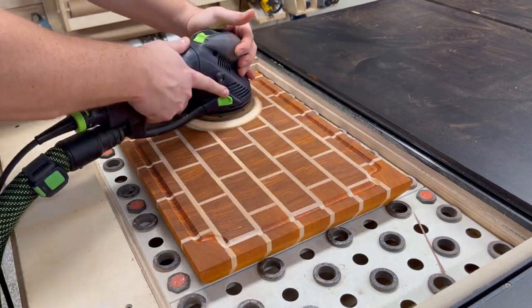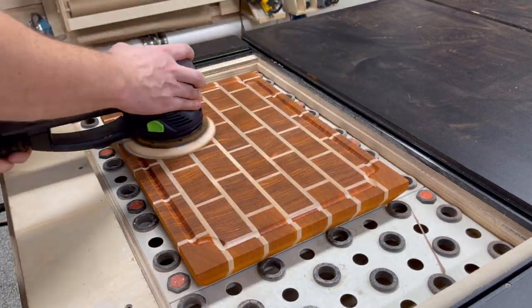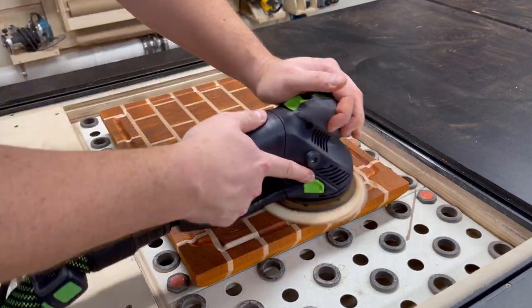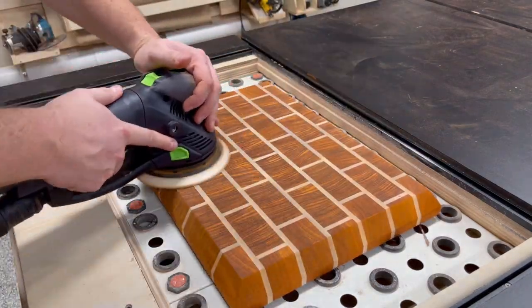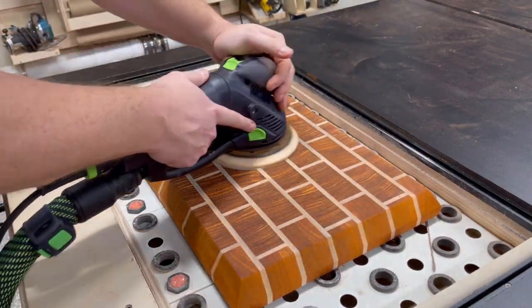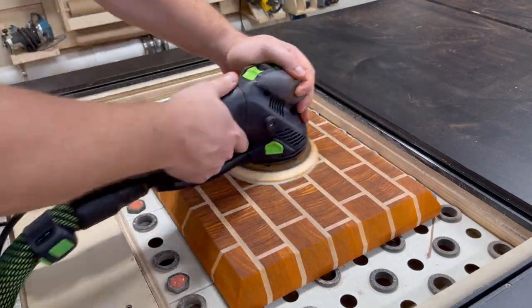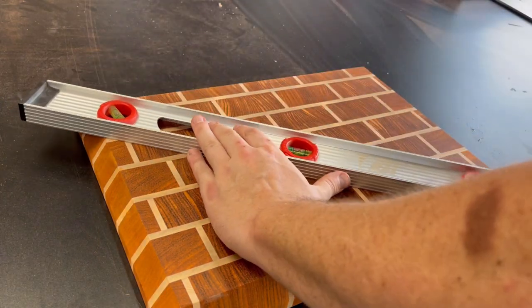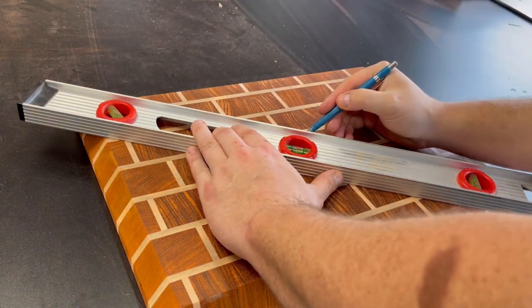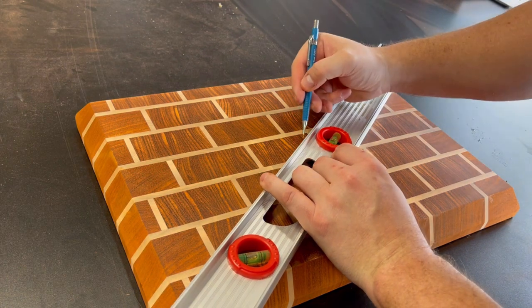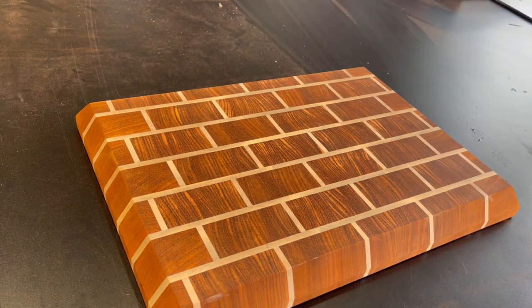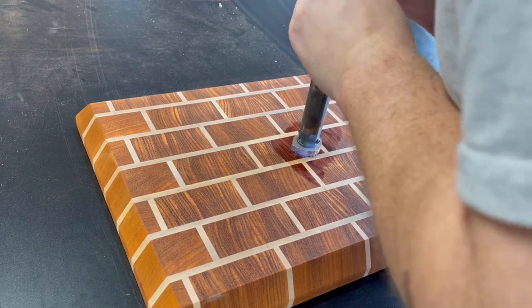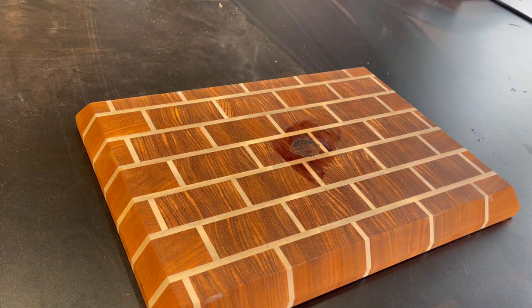With all four edges cut, I go back to the downdraft table and complete the sanding process, working my way all the way up to 220. I'll be adding my brand to this board, so to find center I use a level as a straight edge and make a couple of diagonal lines to find the exact midpoint of the board. Once I have that, I dab the middle part of the board with a little bit of water and apply the branding iron to sear my logo into the back of the board.